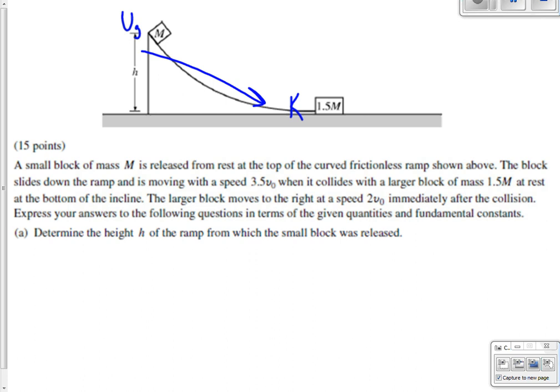So that means we want to express that the mgh at the top must be equal to the one-half mv squared at the bottom. But let's make sure we're putting in the right terms. It says that it's moving at some speed that's three-and-a-half times whatever this variable v initial is. That could be anything. It's just putting all of the speeds in the problem in terms of one variable.